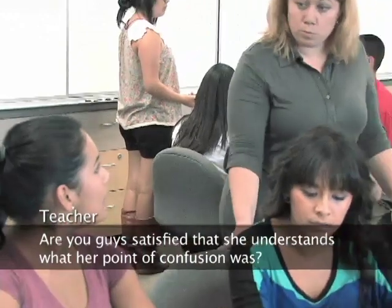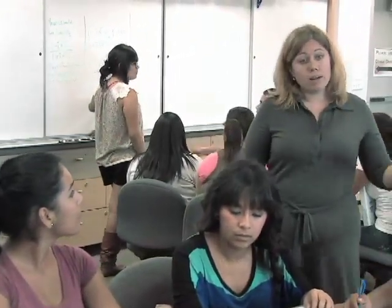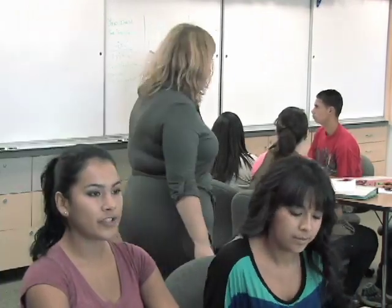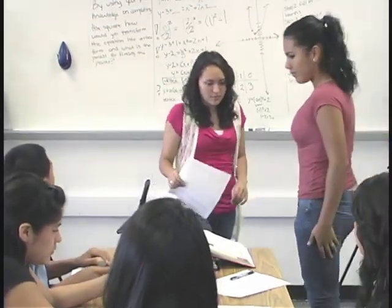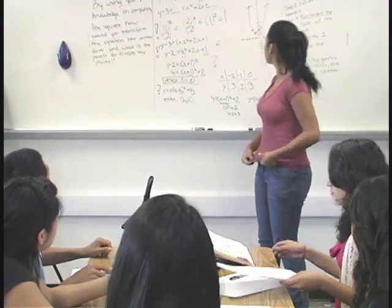Are you guys satisfied that she understands what her point of confusion was? Yeah. All right. We need you guys to have a conversation about what you covered today and talk about the point of confusion and how you worked through it. Talk about what you learned. So who wants to go first? Well, what I learned over the point of confusion was on completing the square equation, the b over two squared. I didn't know that you had to do that before completing the square. And now I do.